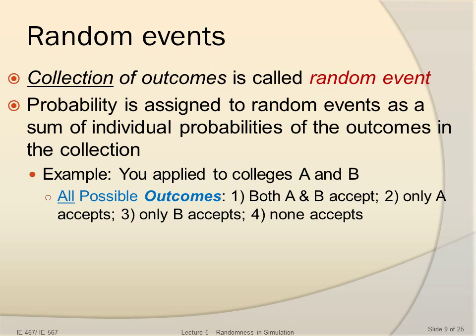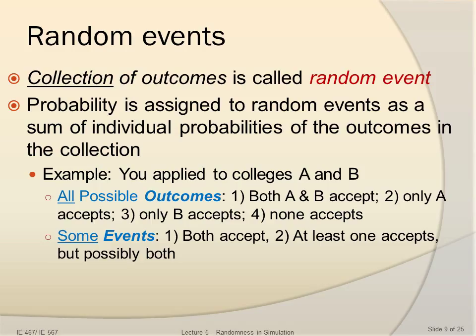Events are different from outcomes — events are a collection of outcomes. For example, Event 1 'both accept' is just outcome 1 (A and B accept). Event 2 'at least 1 accepts, but possibly both' is formed by outcomes 1 (both accept), 2 (only A accepts), and 3 (only B accepts). So Event 2 is represented as a sum of those three outcomes — outcomes 1, 2, and 3.